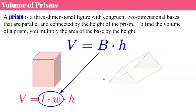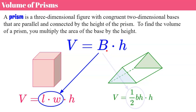We can also talk about a triangular prism. A triangular prism has two parallel triangular bases. We use the same formula to find its volume — we just replace the base with one-half base times height, because the area of a triangle is one-half base times height. Then we multiply by the height of the prism, which connects the two triangular faces.